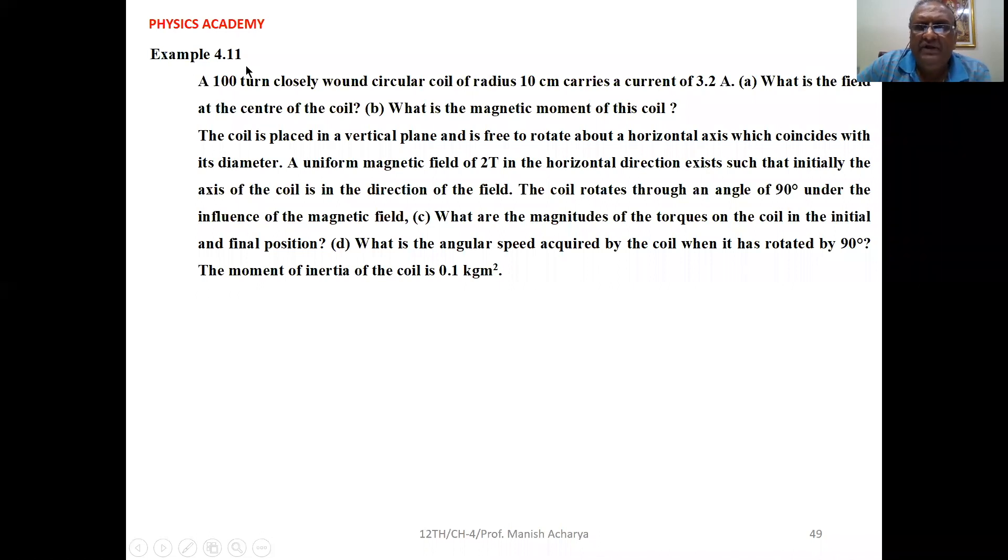Example 4.11: A 100 turn closely wound circular coil of radius 10 cm carries a current of 3.2 ampere.